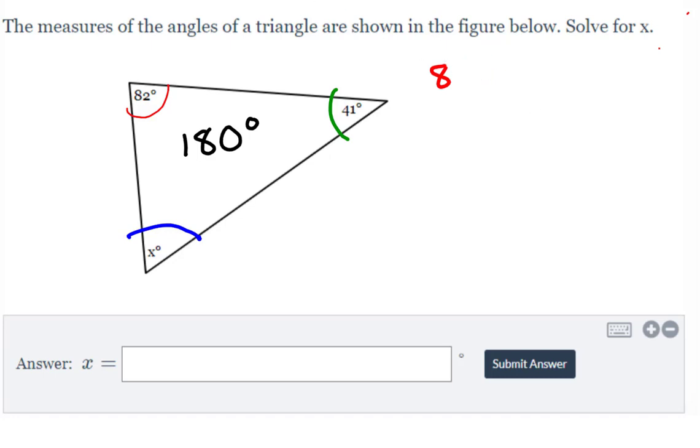let's try that again, the red angle, which is 82, and add that to the green angle, which is 41, and we add that to the blue angle, which is x, that all of that should be equal to 180 degrees.